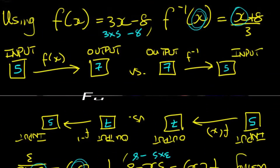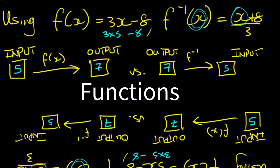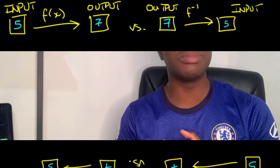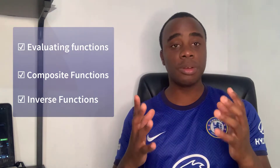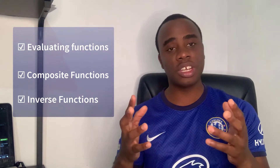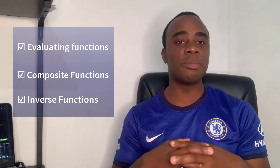Number four: functions. I chose to include this topic because the questions were largely the same — you were asked to evaluate a function, evaluate a composite function, or determine an inverse function. So if you're able to master those skills, you're guaranteed around 6 to 7 marks on average on the exam. And here's a tip: if you're already good in algebra and you know how to change the subject and substitute, then functions should be a breeze because it's the same skills.